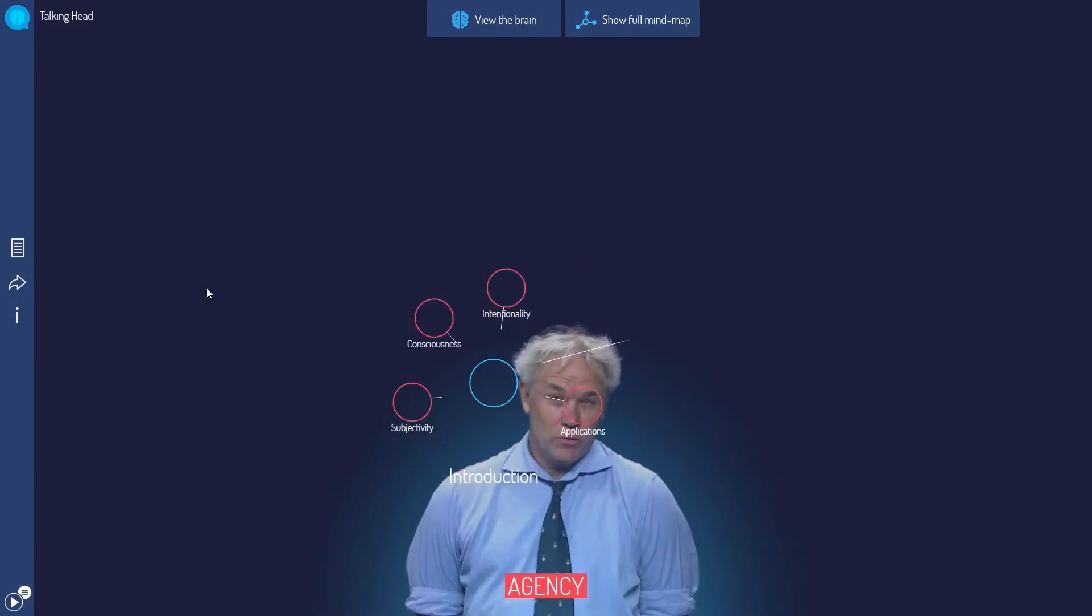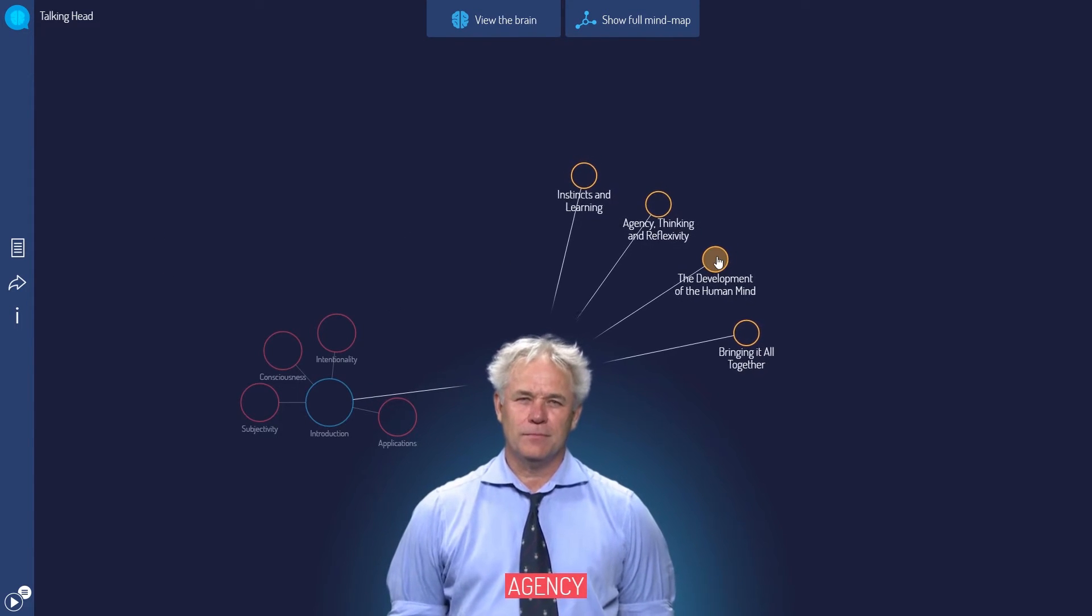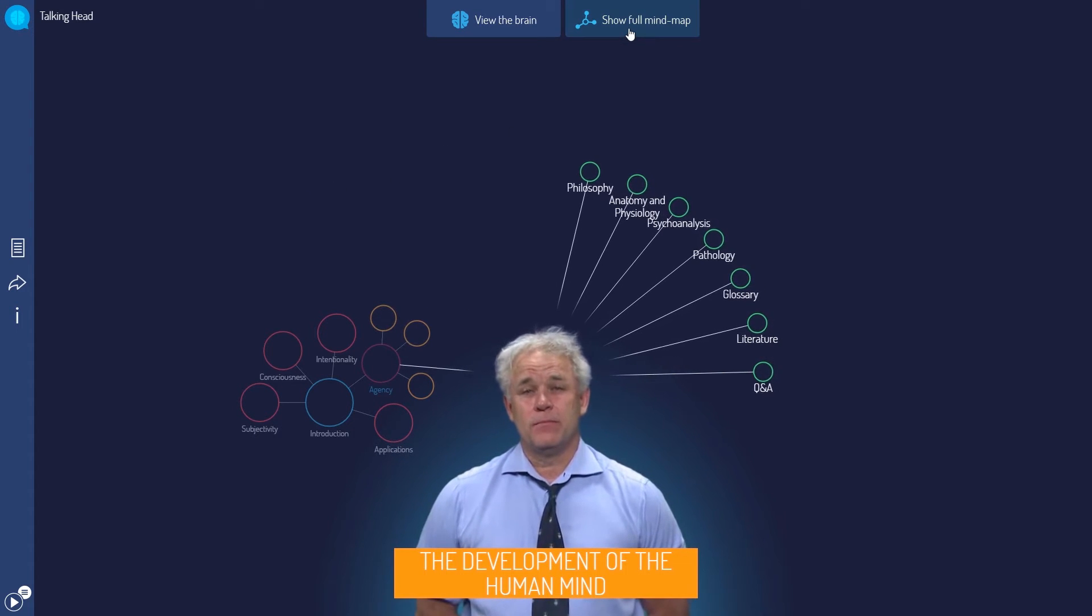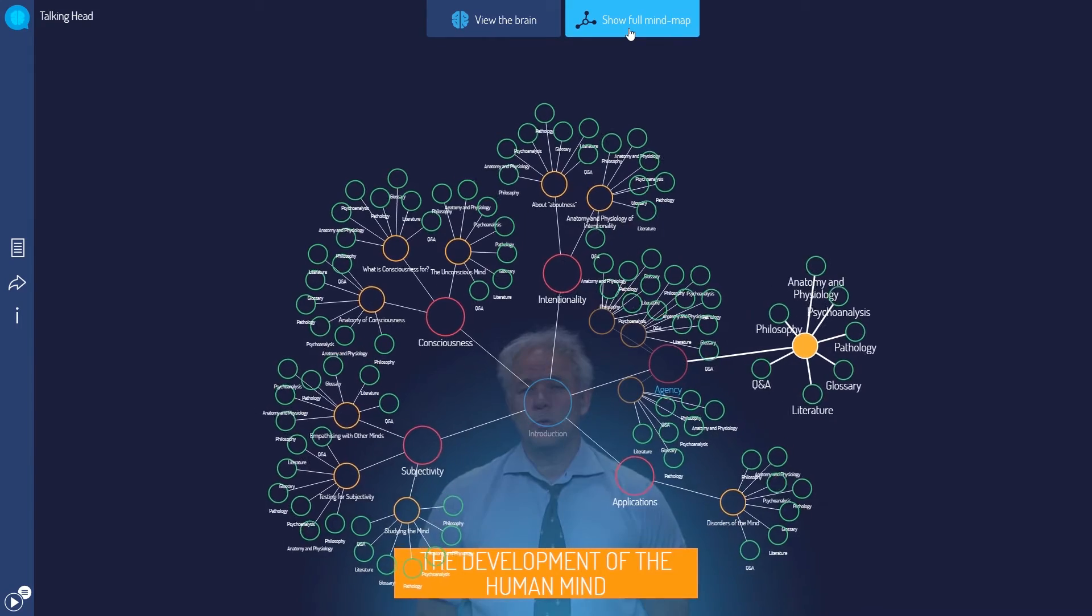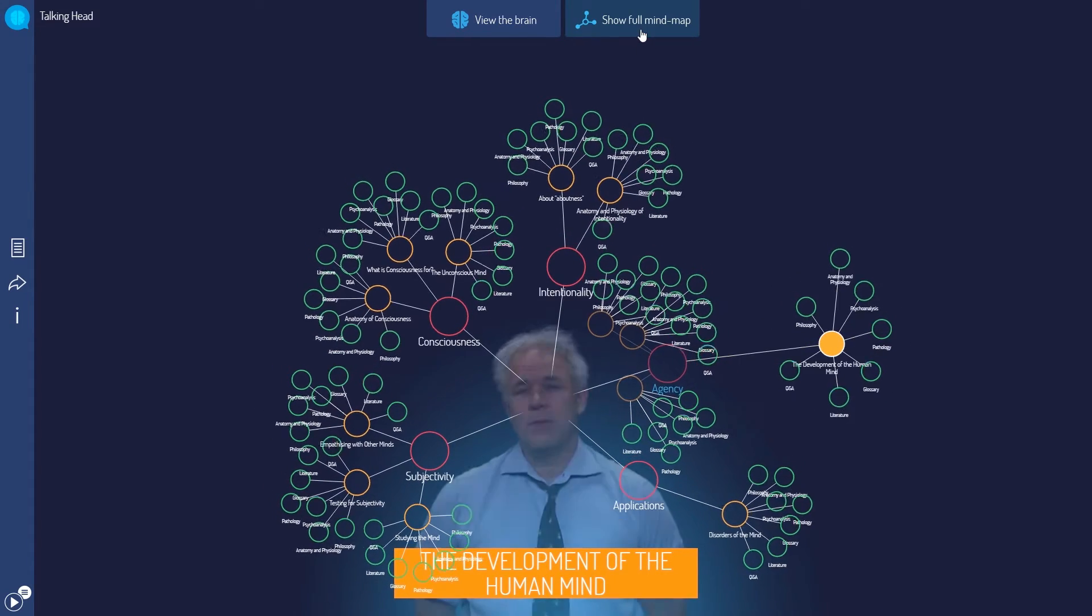Navigating through a series of short video lectures, users explore various topics about the mind. Content structure and navigation are designed as a dynamically generated mind map, which hovers around Professor Solms' head as he speaks, allowing users to jump from one train of content to the next.